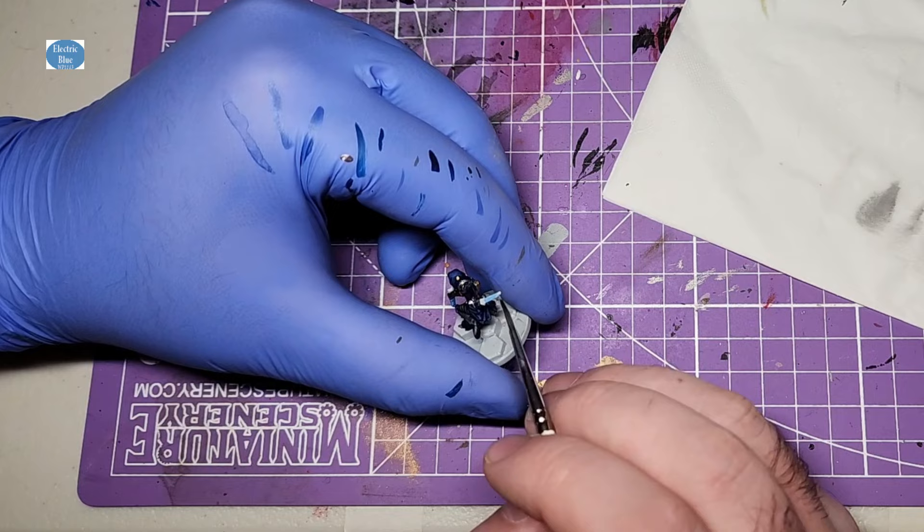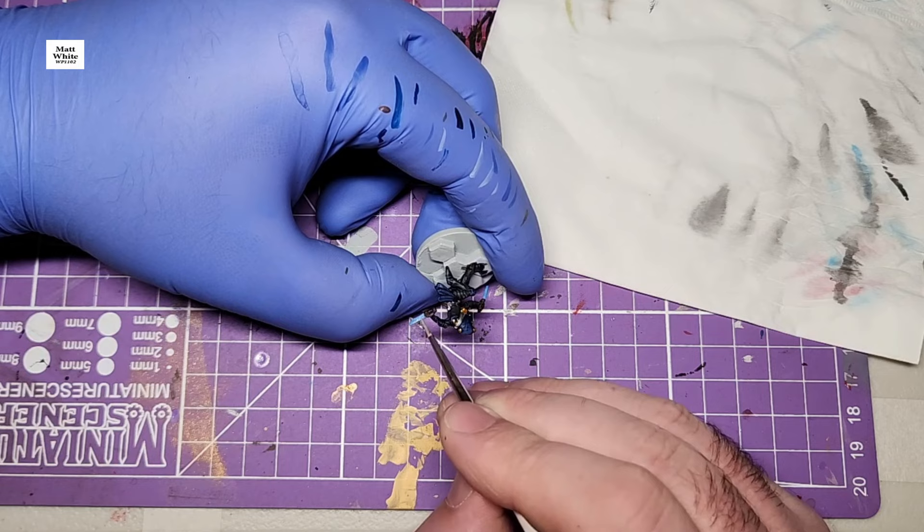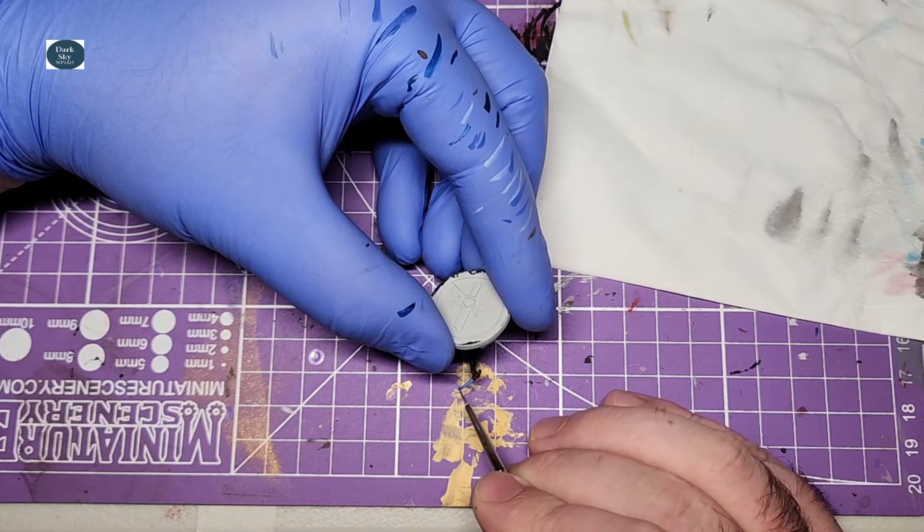Next is the daggers. I didn't want to do these metal, so I went with more of a power weapon style and I started with Electric Blue. Then from the blunt side of the dagger I brought in some white, and then along the sharp edge I just added some Dark Sky to make it pop.